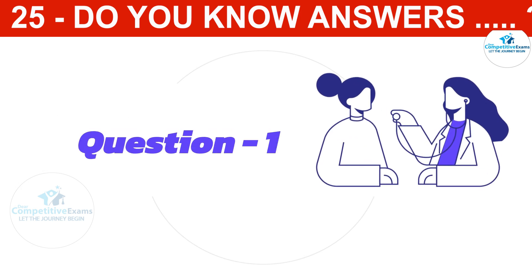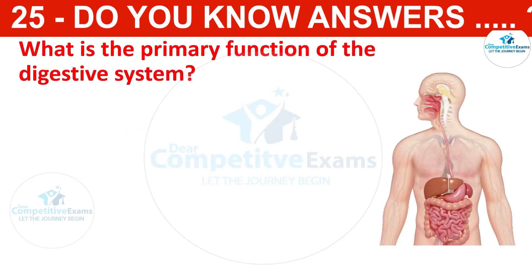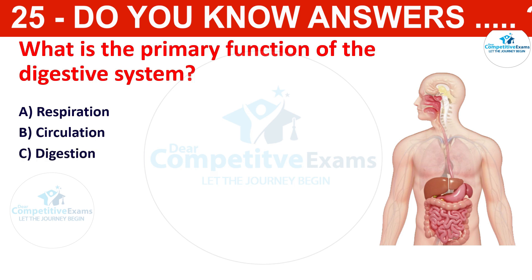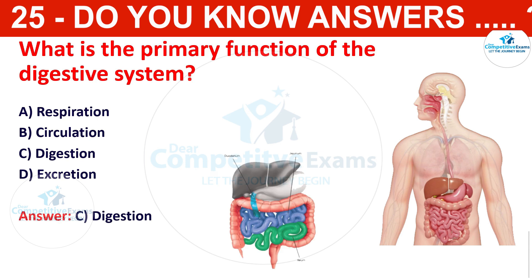Question number one: What is the primary function of the digestive system? Your options are respiration, circulation, digestion, and excretion. The correct answer is digestion. The main purpose of the digestive system is to break down food into nutrients that the body can absorb and use.